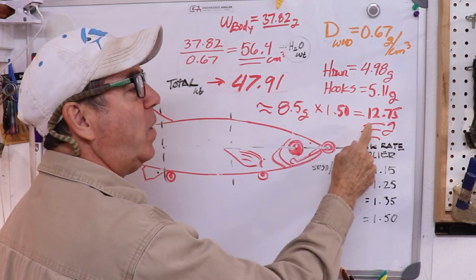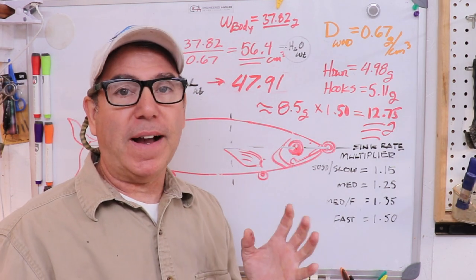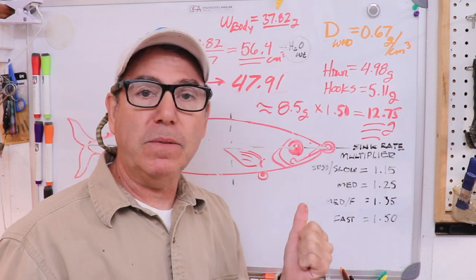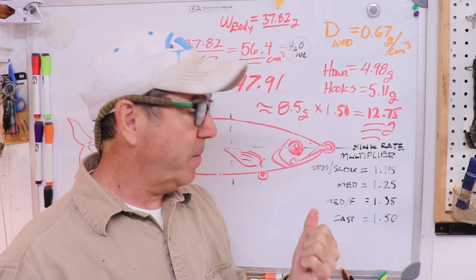If I multiply it times 1.5, which is my fast sinking, I get 12.75, and I put about 12.8 grams in that lure. So I actually lucked out and got it about where I want it. In fact, I probably would add just a little more on the next one, but I don't know that I have more room in that lure to actually add weight.